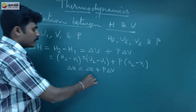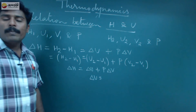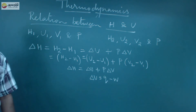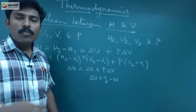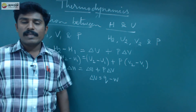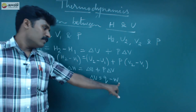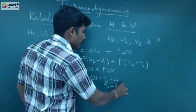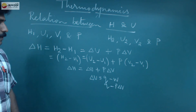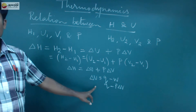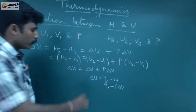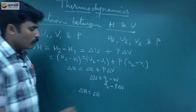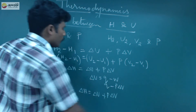ΔU is equal to Q minus W, where Q means heat absorbed by the system and W means work done by the system. So ΔU equals Q minus PΔV. Therefore, in the final form, ΔH is equal to ΔU plus PΔV.